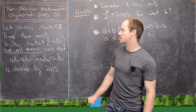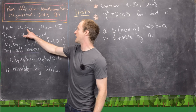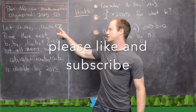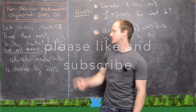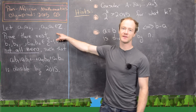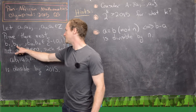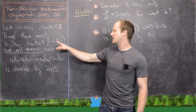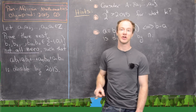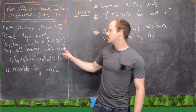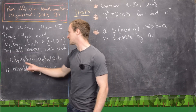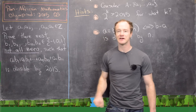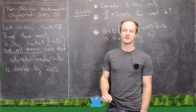The statement of the problem goes like this. We want to let A1, A2, all the way up to A11 be integers — so we've got 11 integers — and then we want to prove that there exists B1, B2, all the way up to B11 in the set {-1, 0, 1}, but they're not all 0, such that A1·B1 + A2·B2 + ... + A11·B11 is divisible by 2015.